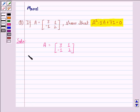now we consider the LHS of this, that is, A² - 5A + 7I.